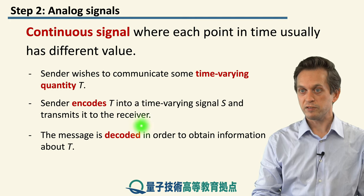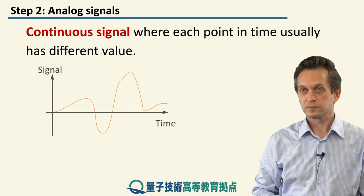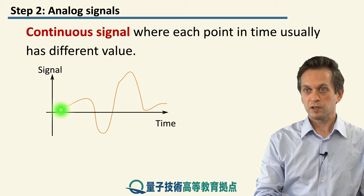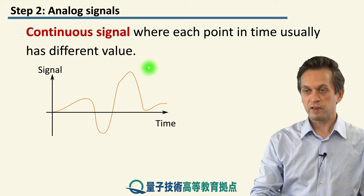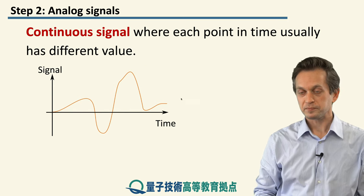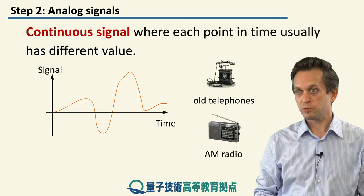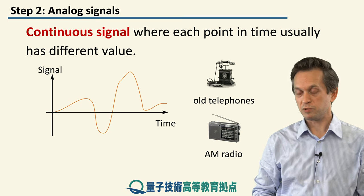The sender encodes this message T into a continuous analog signal S, which is then transmitted to the receiver where it must be decoded. Visually, over time we are generating a smoothly varying curve with different values at different times. This is in fact how old telephones used to work, how AM radios used to work, and how old TV broadcasting used to work.